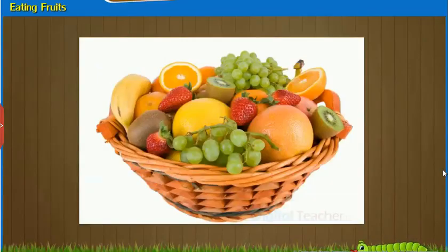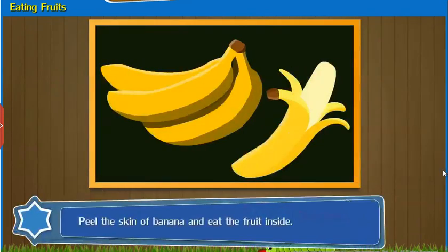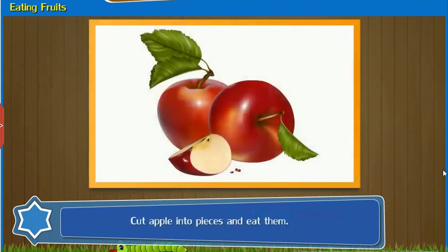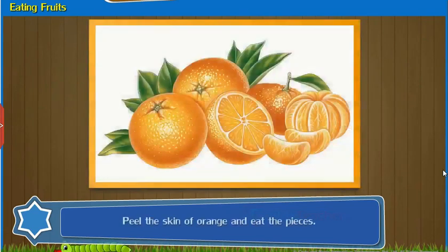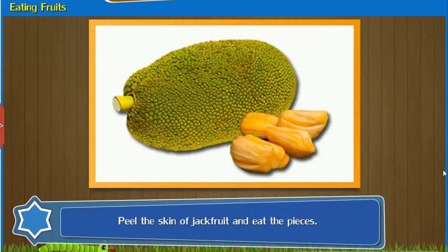Eating Fruits: Let's see how fruits can be eaten. Peel the skin of banana and eat the fruit inside. Take out the seeds in pomegranate and eat them. Cut apple into pieces and eat them. Peel the skin of orange and eat the pieces. Peel the skin of jackfruit and eat the pieces.